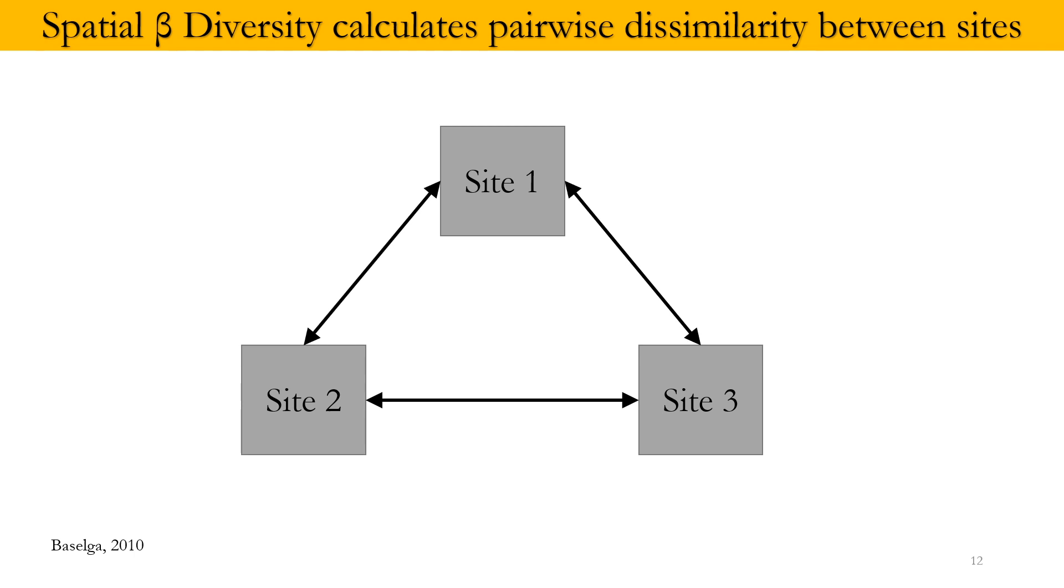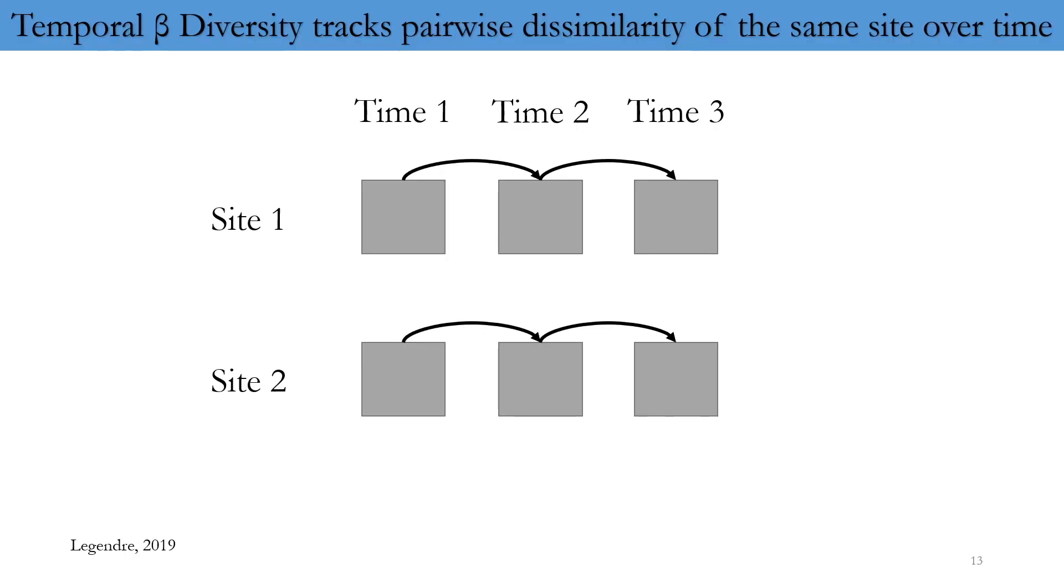But temporal beta diversity or beta diversity in time is slightly different. What it does is it tracks the pairwise dissimilarity of the same site over different periods of time. For example, in this case, site one, the dissimilarity between time period one and time period two is measured, time period two and time period three is measured. And this happens in a linear fashion. And these dissimilarities are then measured in various different sites.